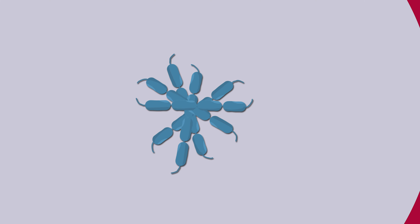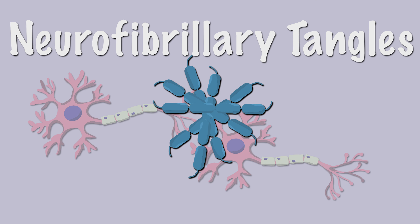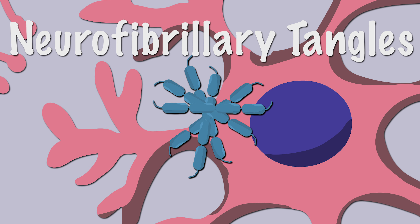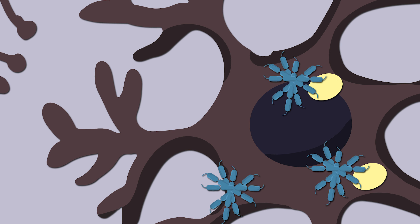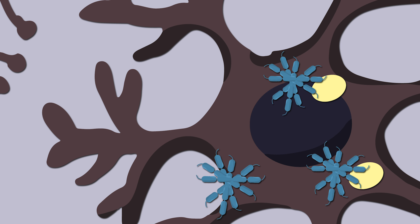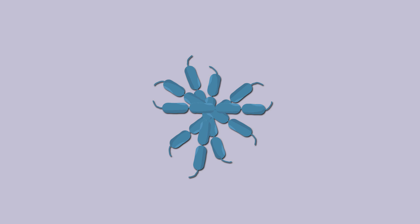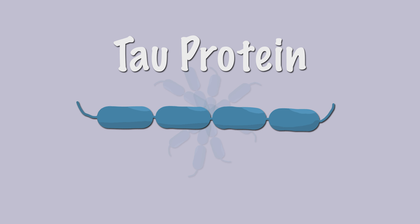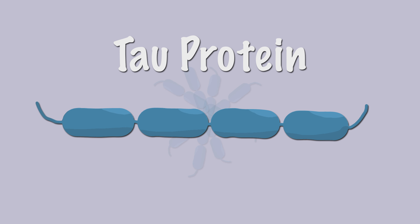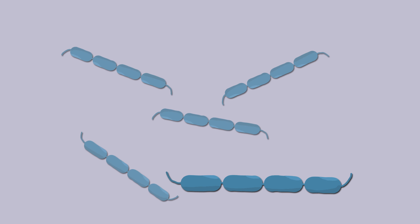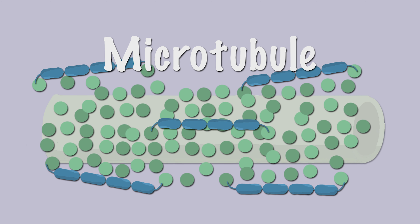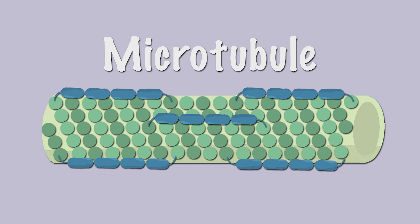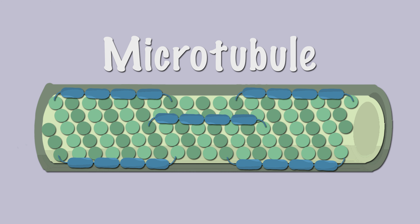In a diseased brain, neurofibrillary tangles make it harder for neurons to receive nutrients and send signals to each other. The neurofibrillary tangles are composed of tau protein. In a healthy brain, tau protein forms microtubules, which are cell structures that transport nutrients and support the cytoskeleton.